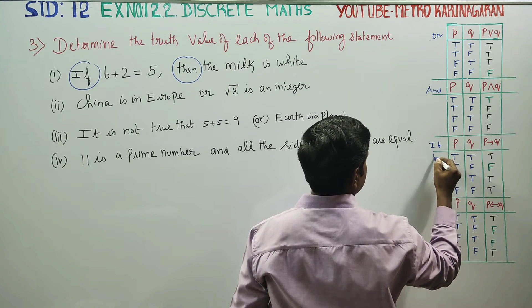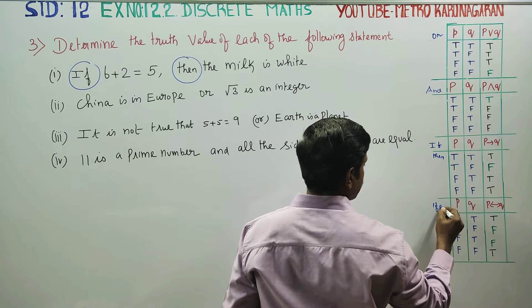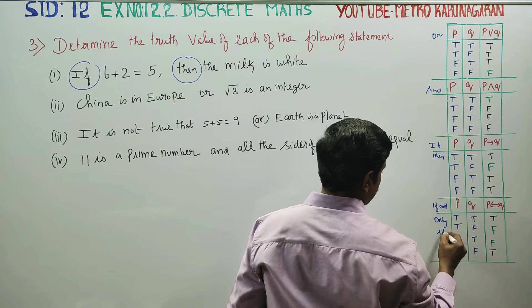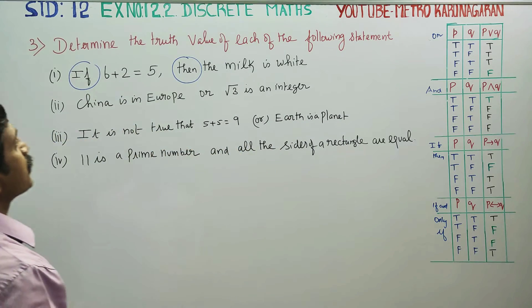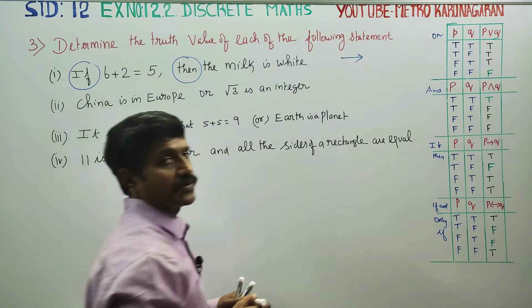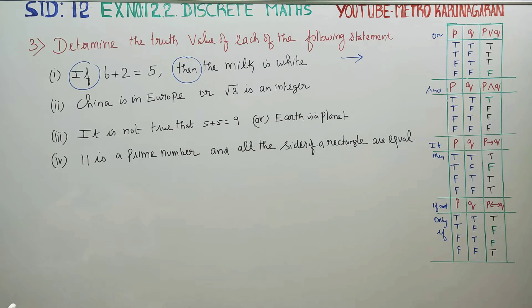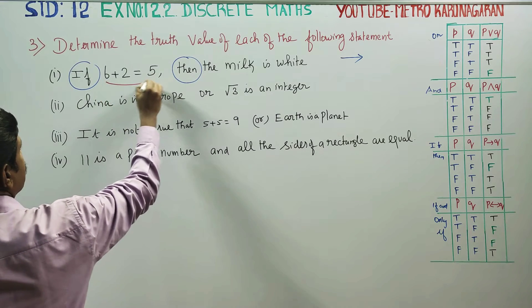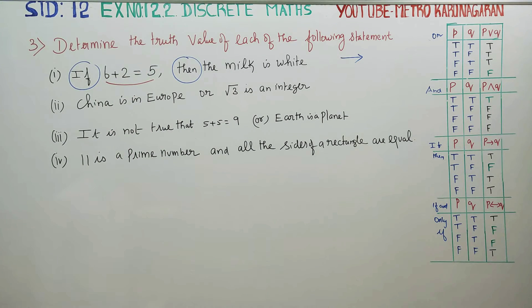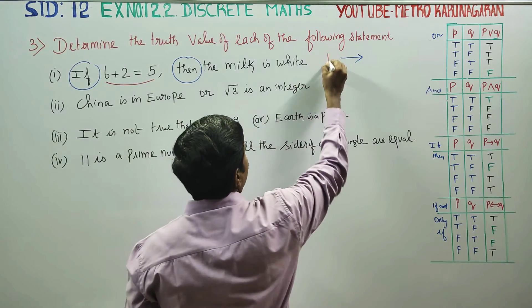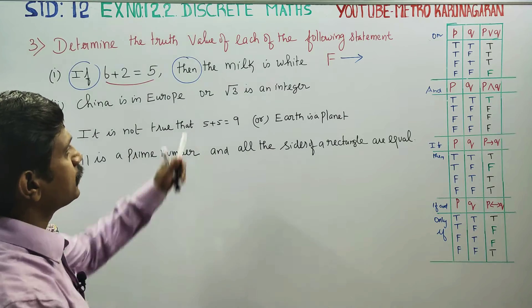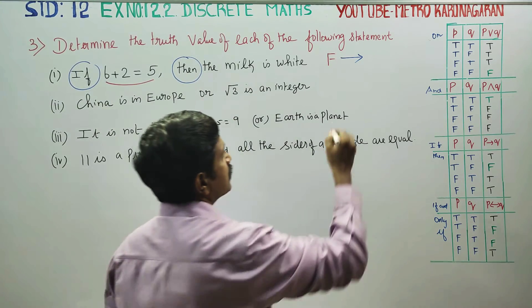If and only if would use its own symbol. Now, 6 plus 2 equals 5 — this is a wrong, false statement. Milk is white — this is a true statement.